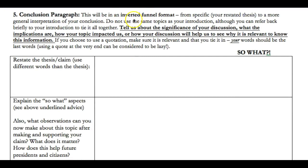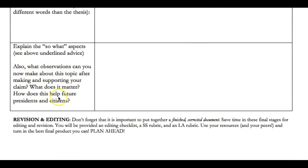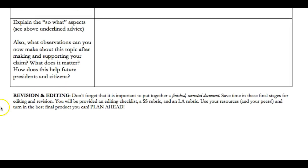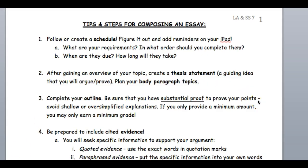In your conclusion paragraph, we're using the inverted funnel format. This is the 'so what' — tell us about the significance of your discussion. Why does it matter? You should not be ending your paper by talking about any of the three presidents. Instead, you're ending by branching back out and getting broad again. What observations can you now make? What does it matter? How does this help future presidents and citizens?